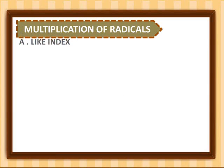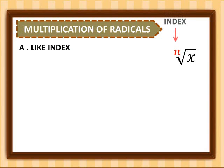Let's have first the like index. When we say index, for the nth root of x, n is the index of our radical. So for square root of a times square root of b, we simply multiply a and b, giving us square root of ab.